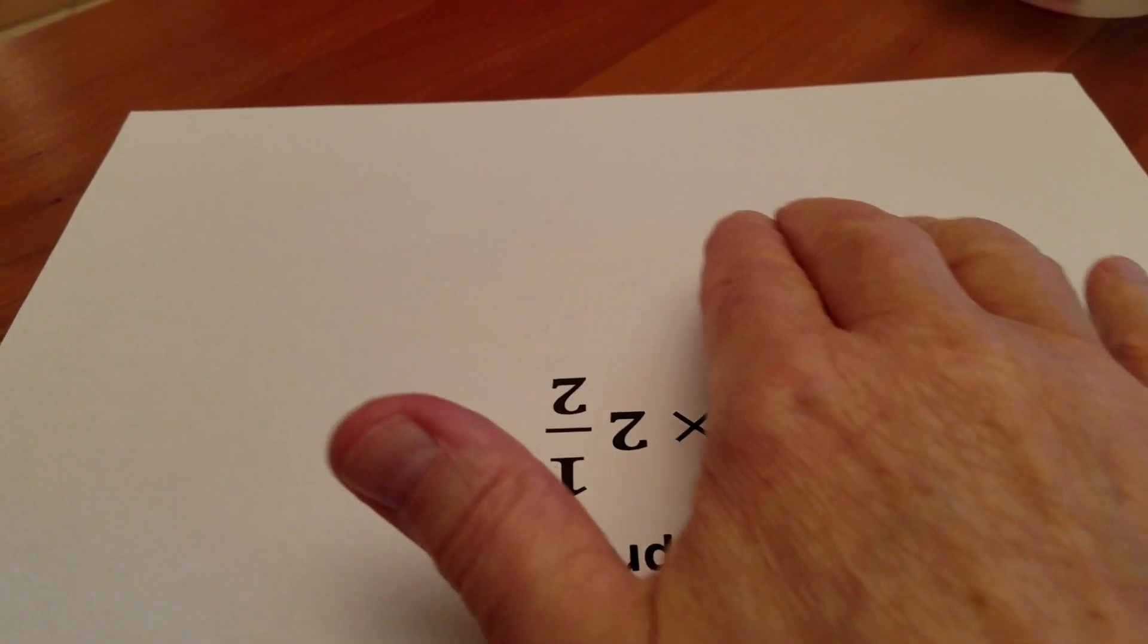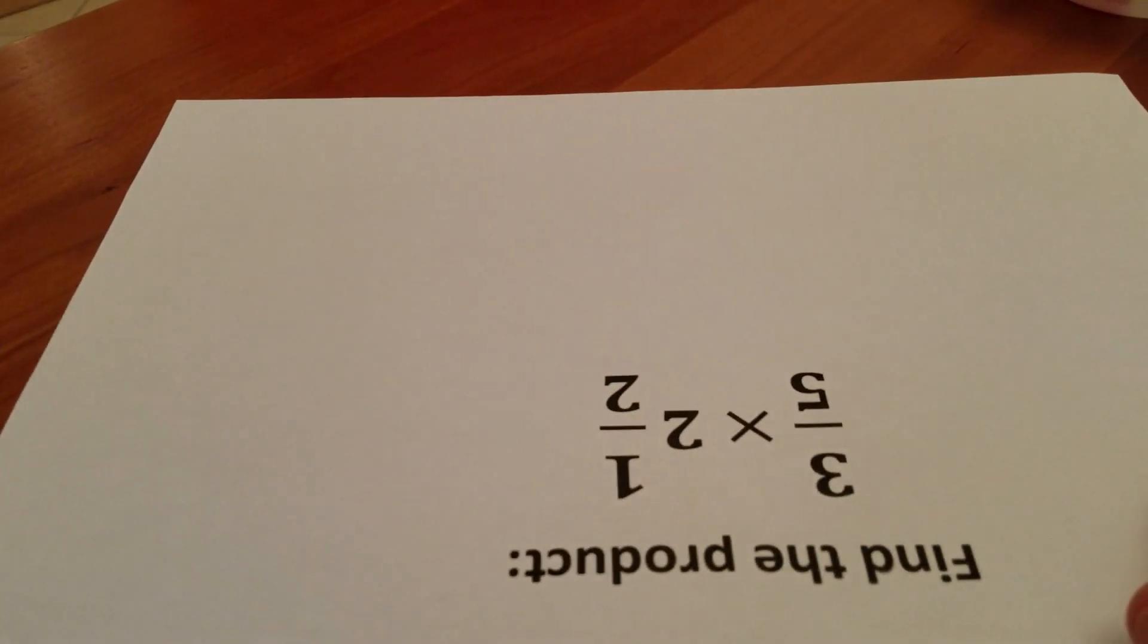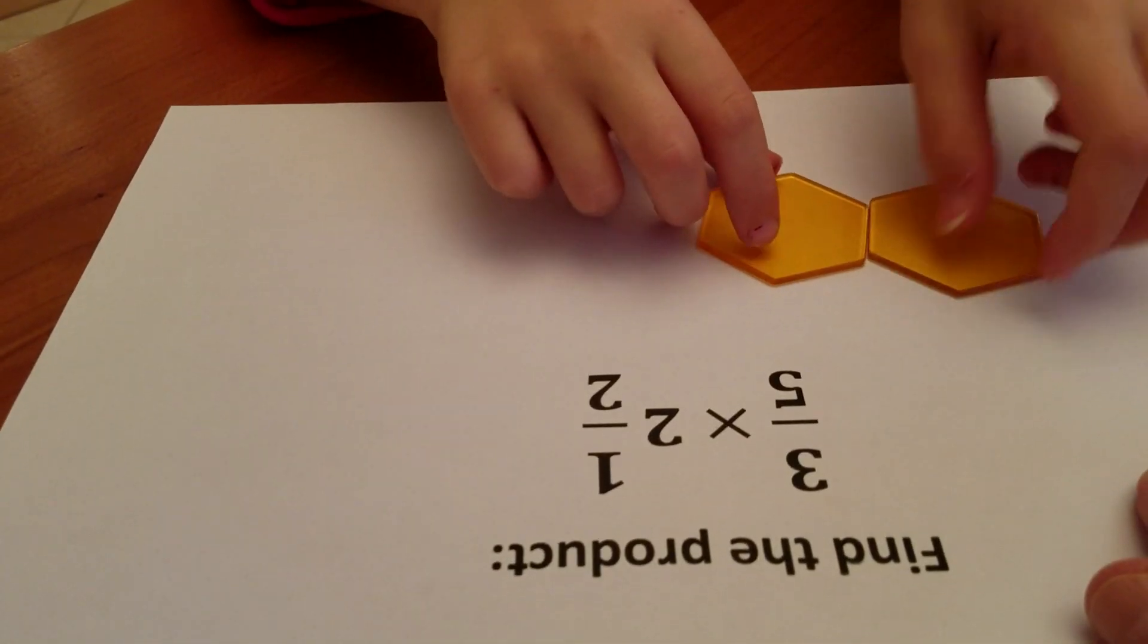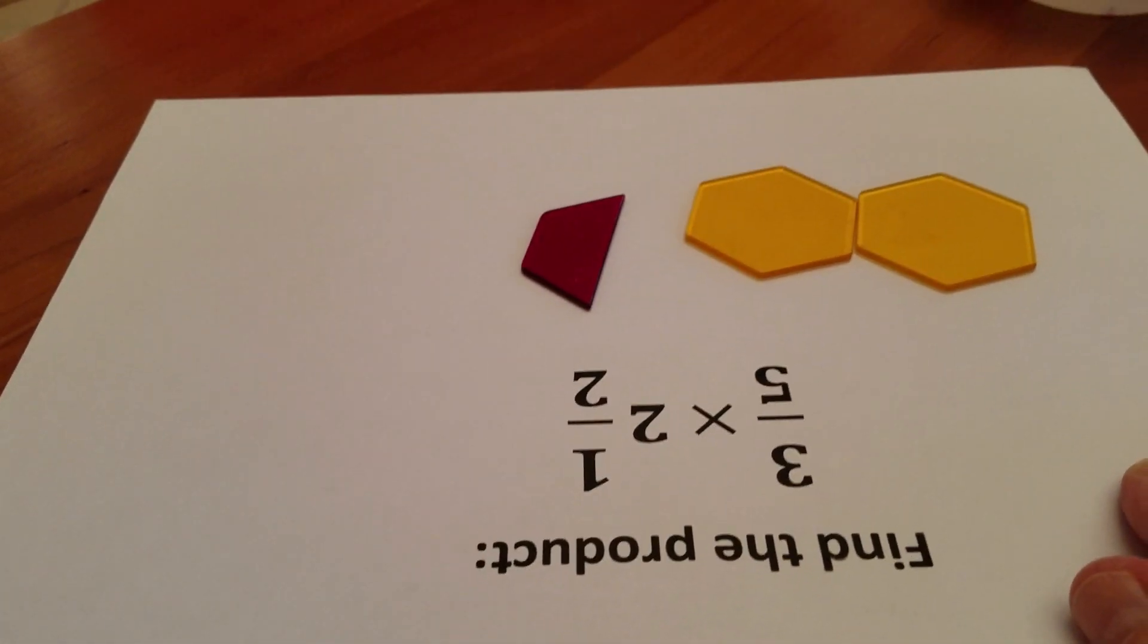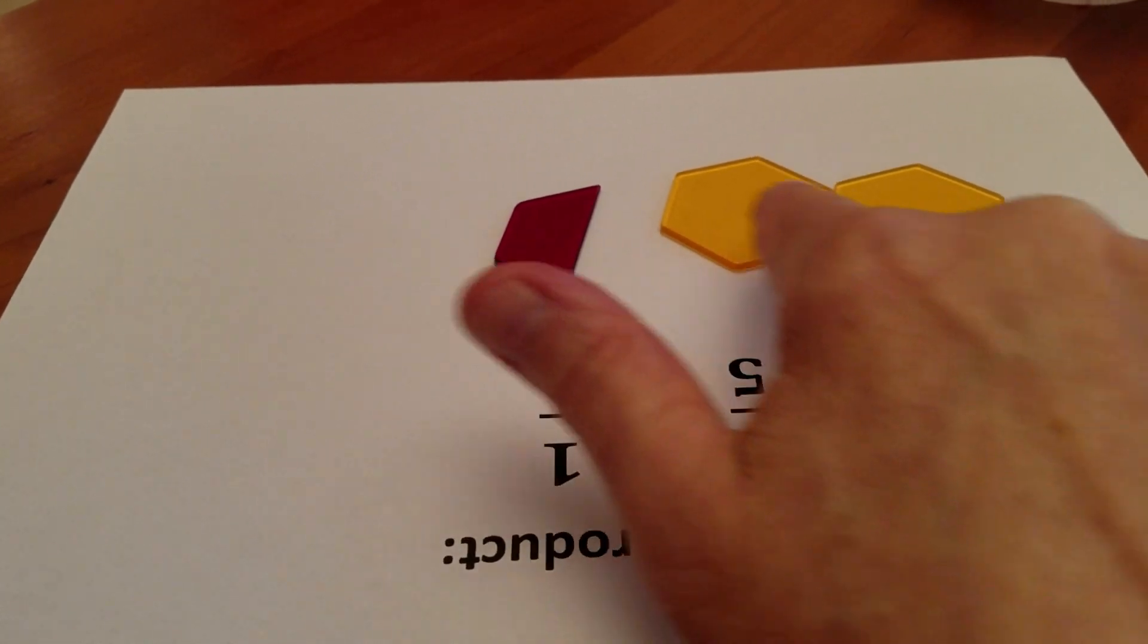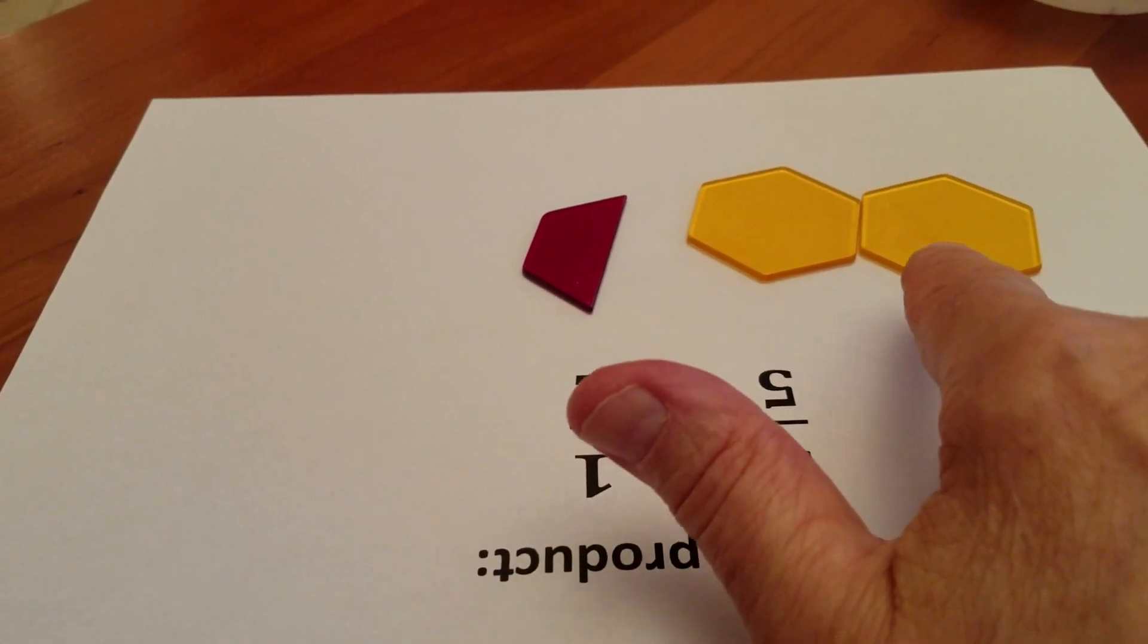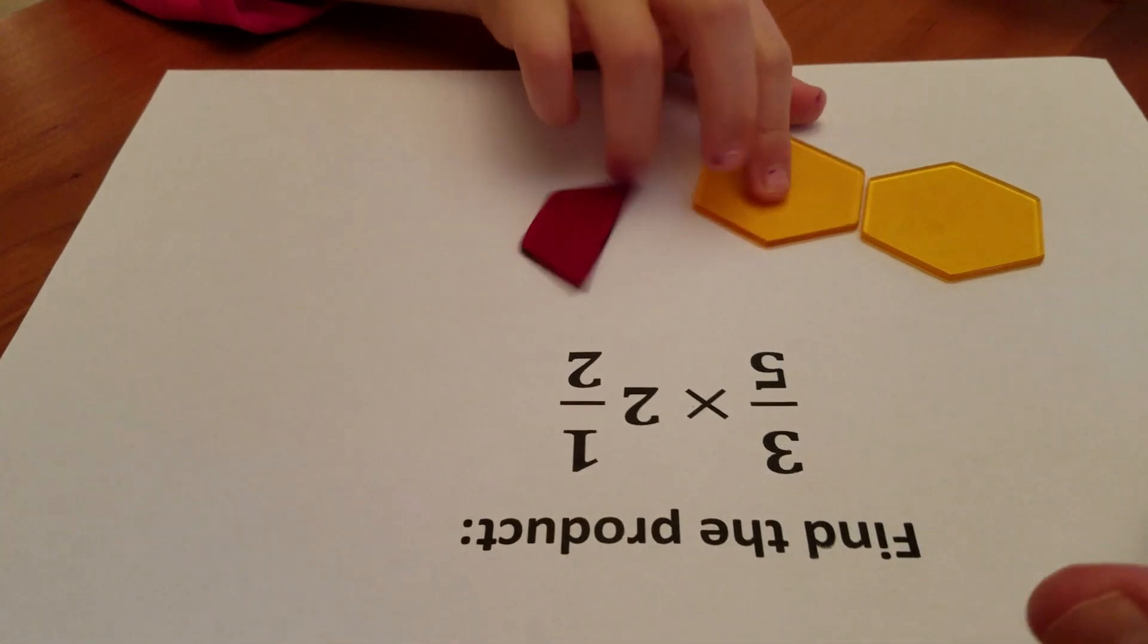Would you please set up for me two-and-a-half: two wholes and one-half. Now we need to take three-fifths of this, so the first thing we need to do is break this up into five equal parts. How would you do that?